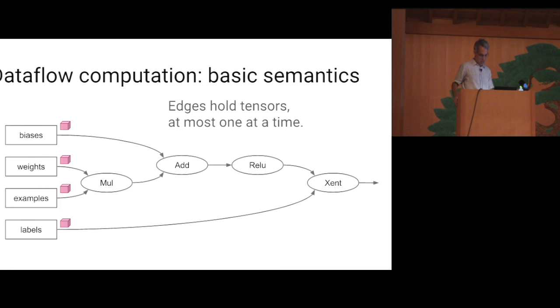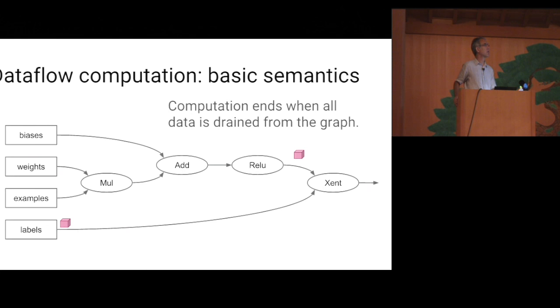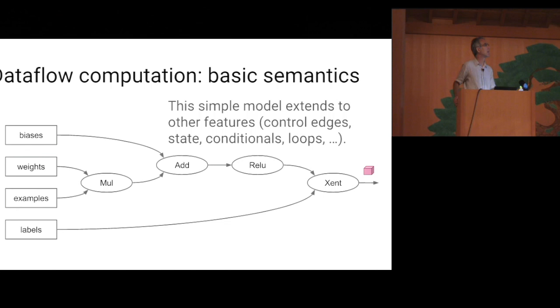We think of edges as holding one or zero tensors at any point in time. When all of the inputs of a node are ready, the node may consume its inputs and produce an output. And after firing, the node is done, it's completed. And the computation of the graph ends when all the data has been drained from the graph. And this very simple model of essentially expression evaluation extends to other features, control edges, which I'll show you in a little while, state, conditionals, loops, and more. Though, of course, in some cases, it needs to be generalized a little bit.